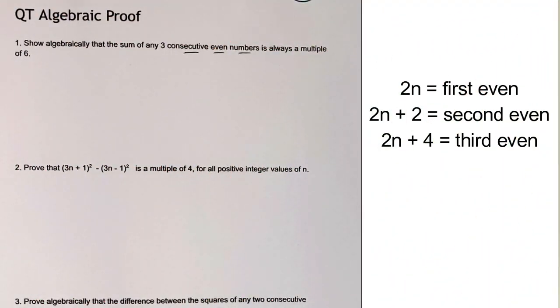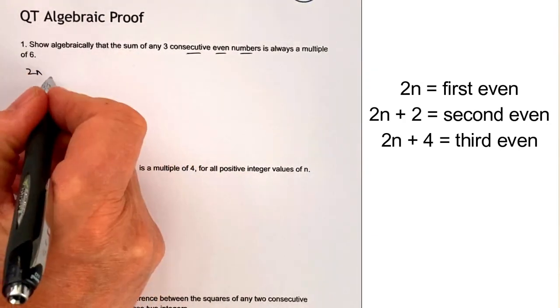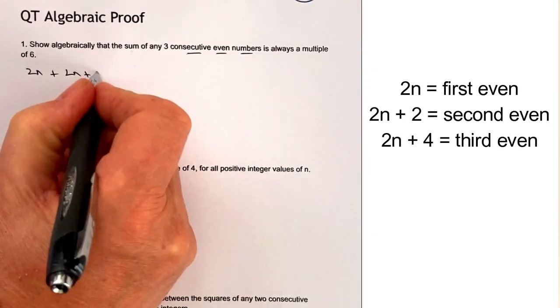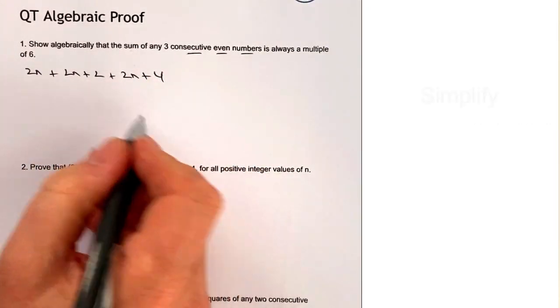Okay, let's put that into this particular question. So we've got 2n, and then we're going to sum it. So we're going to add it to 2n plus 2, and then we're going to sum it again to the third one, which is going to be 2n plus 4.